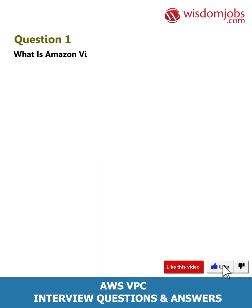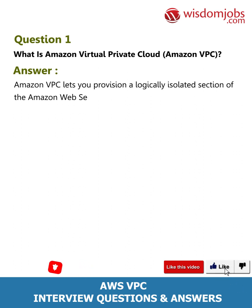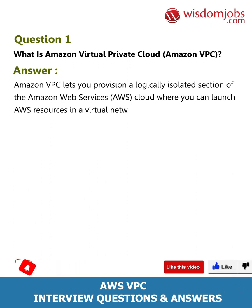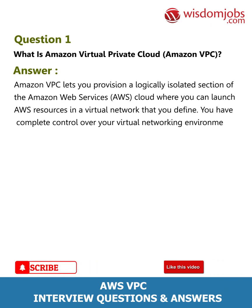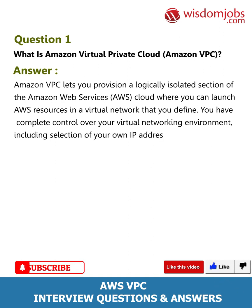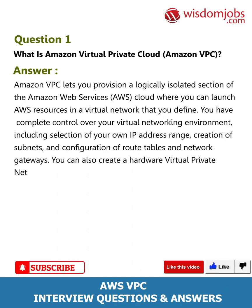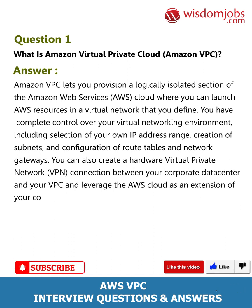Question 1: What is Amazon Virtual Private Cloud (Amazon VPC)? Answer: Amazon VPC lets you provision a logically isolated section of the Amazon Web Services (AWS) cloud where you can launch AWS resources in a virtual network that you define. You have complete control over your virtual networking environment, including selection of your own IP address range, creation of subnets, and configuration of route tables and network gateways. You can also create a hardware virtual private network (VPN) connection between your corporate data center and your VPC.